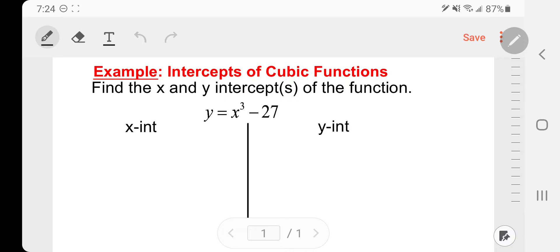Similar to the last couple of videos, when we're looking for an x-intercept we're going to plug in 0 for y and solve for x, and when we're looking for a y-intercept we plug 0 in for x and solve for y. So that's exactly what we're going to do here with this cubic function. I have y equals x to the third minus 27.